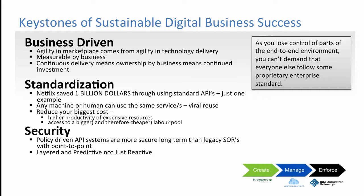Security is usually the last thing people look at, but it must be the first. By implementing things in a standardized, API-driven way, you'll actually improve your security. Systems of record will have a much better secure exposure, and even back-end applications will have a better security layer because everything is done in a standardized way. Because you have granular components all driven in a standardized way, measuring and auditing security on these systems is much, much easier than on monolithic proprietary systems. The security is layered and predictive, not just reactive — you can put mechanisms in place to actually predict the outcome and measure it. As you lose control of the end-to-end environment, you can't demand everyone follows your proprietary enterprise standard; you have to develop it in an industry standard way.